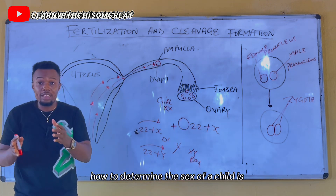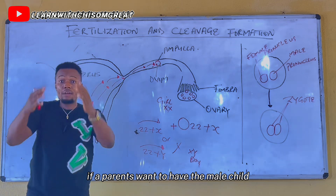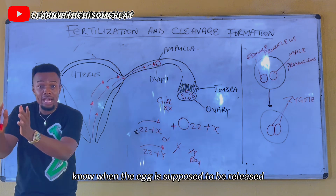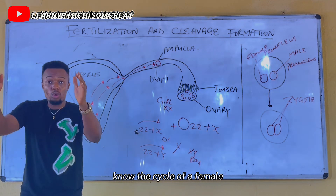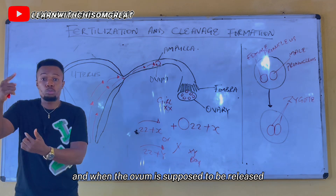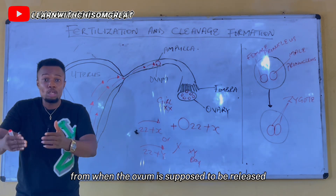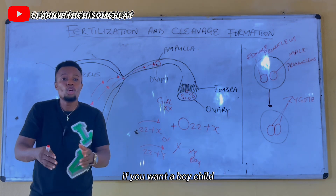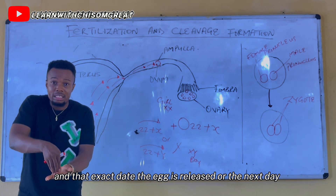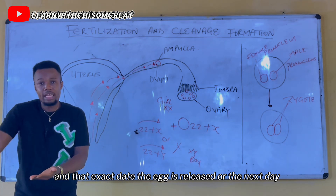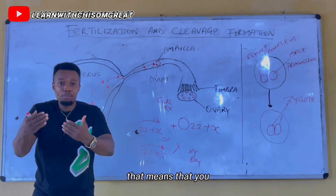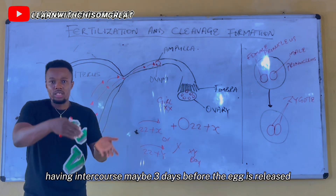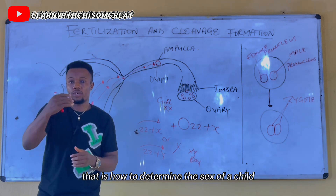So how to determine the sex of a child: calculate the female cycle, know when the egg is supposed to be released, and time intercourse accordingly. If you want a boy child, have intercourse on the exact day the egg is released or the next day. If you want a girl child, have intercourse about 3 days before the egg is released.